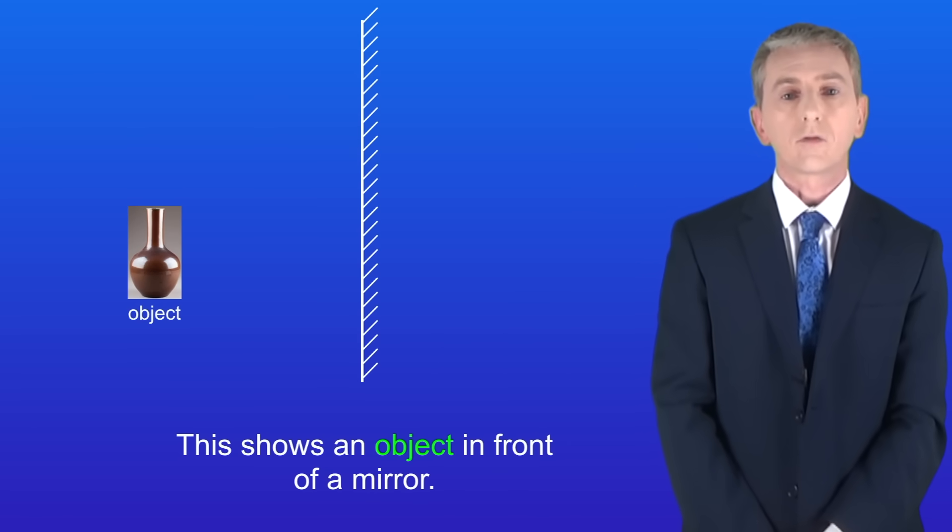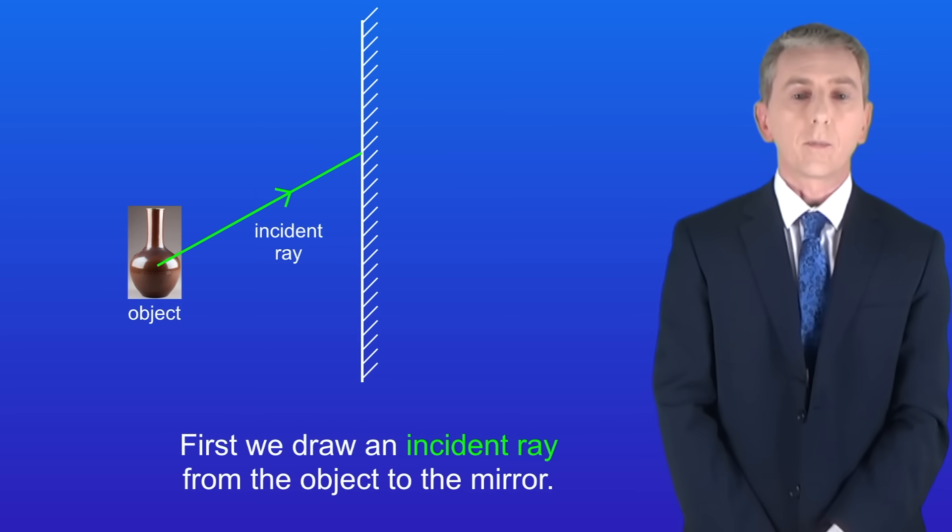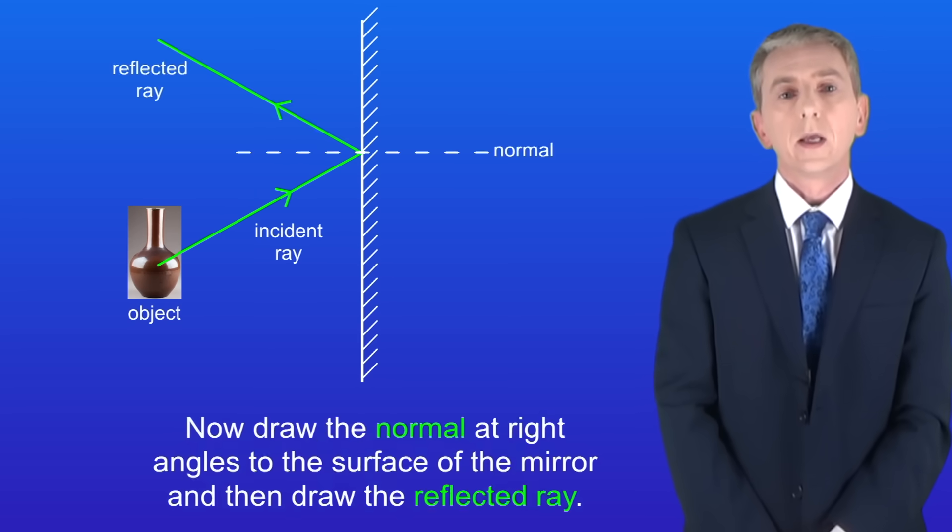I'm showing you here an object in front of the mirror. We're going to use a ray diagram to work out where the image will appear in the mirror. First we draw an incident ray from the object to the mirror. Now draw the normal at right angles to the surface of the mirror and then draw the reflected ray.